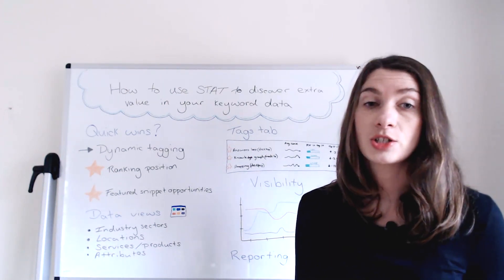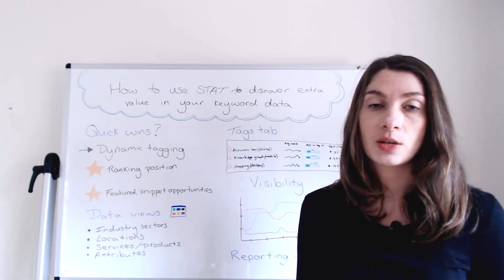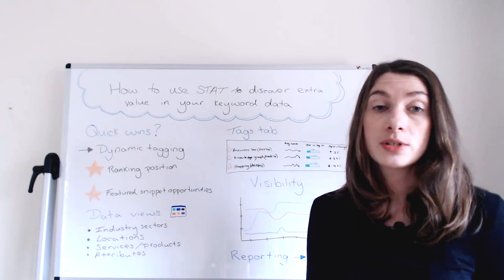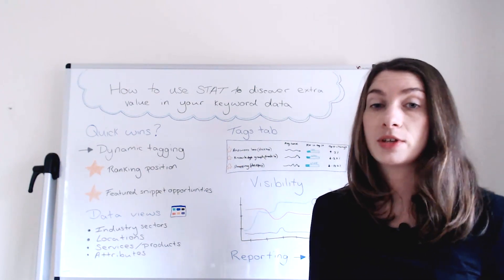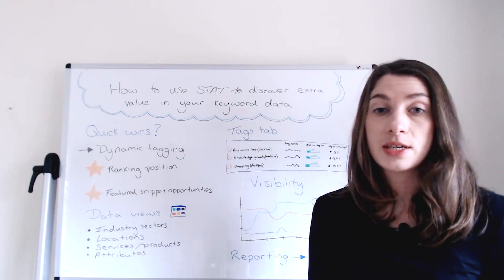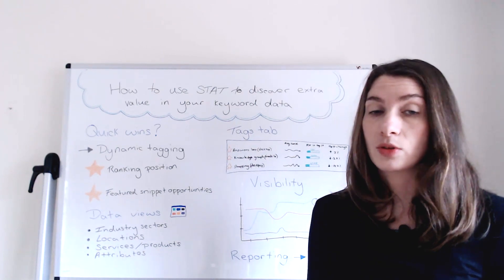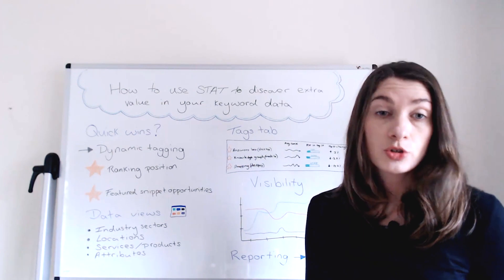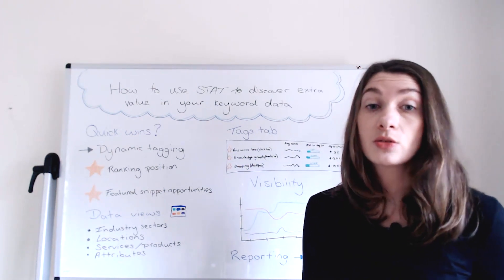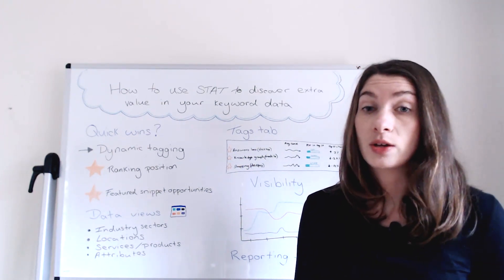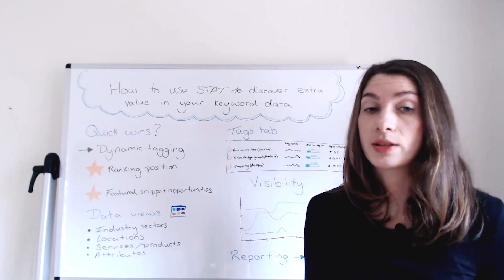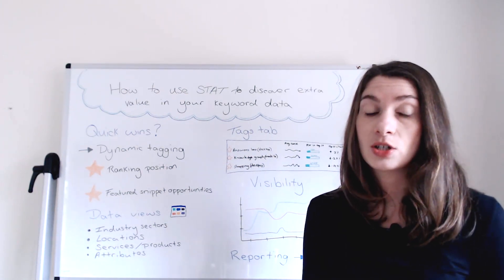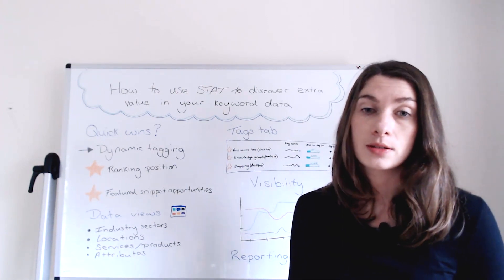So maybe your strategy includes hunting down a featured snippet. If so, you can use STAT to set up a dynamic tag that monitors keywords that result in featured snippets. If you see keywords that aren't ranking well within that grouping, they're not winning those snippets. So if you're tracking keywords for a client, this is a great way of seeing where your client owns a snippet and where they don't. You can try to take the spot from their competitors by finding new opportunities to create optimized content.